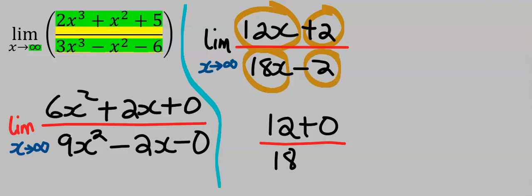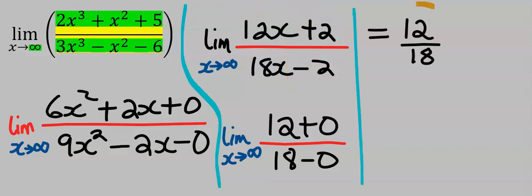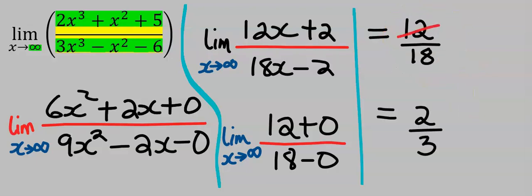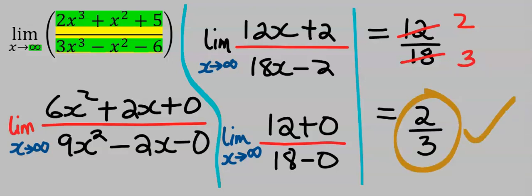Differentiate 2, which gives zero. We are left with 12 over 18. What is the highest number that can go into both 12 and 18 without a remainder? It is 6. 6 into 12 is 2, and 6 into 18 is 3. Hence our final answer is 2/3, which is the same as we got earlier.